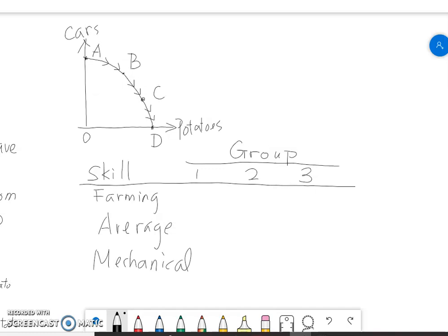In the previous video we already said that in economics the bowed out shape of PPF simply says that the opportunity cost is increasing. In other words, when we move from A to B to C all the way to D, for each potato we gain we have to give up more and more cars.